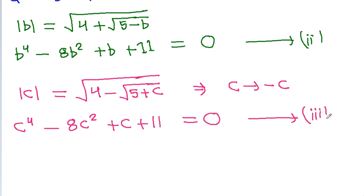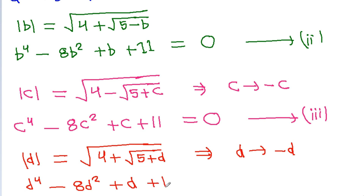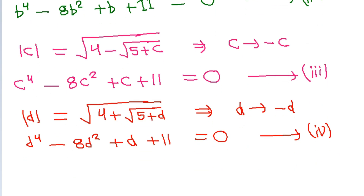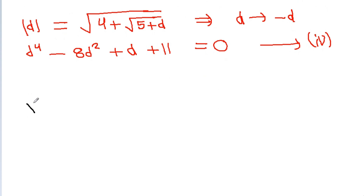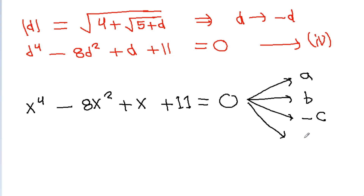Equation 4 is mod d equals root under (4 minus ...), giving d⁴ minus 8d² plus d plus 11 equals 0. Equation 4 is a biquadratic equation whose roots are a, b, minus c, and minus d.